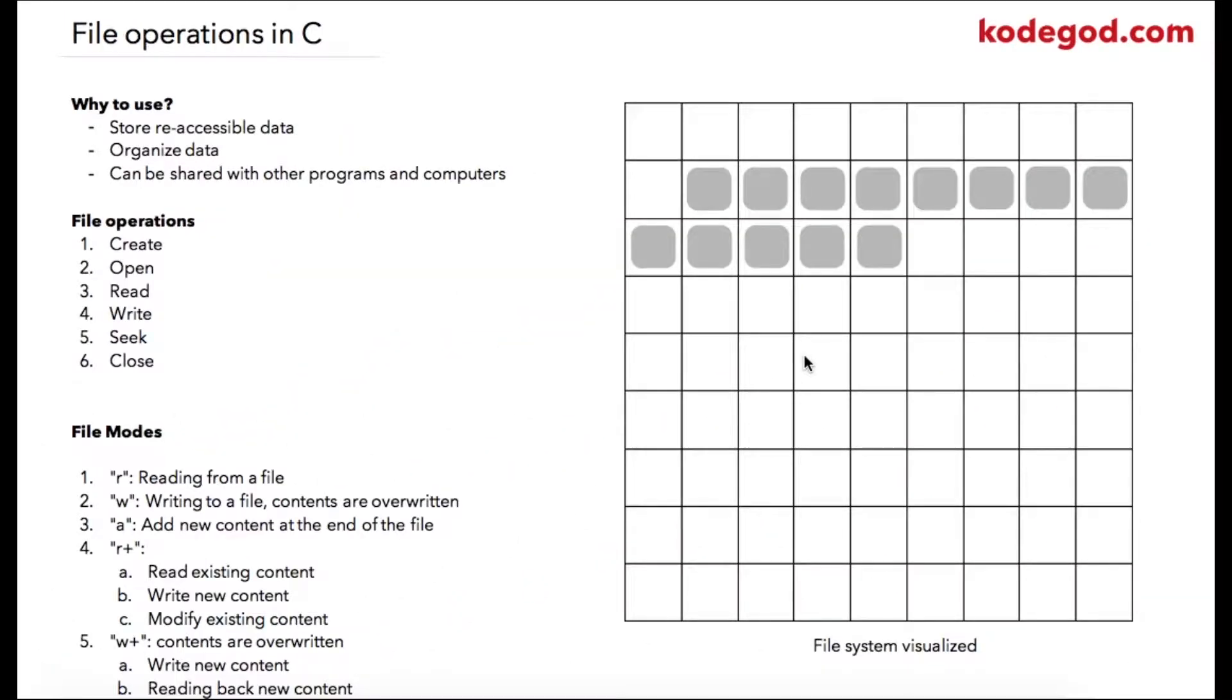In this lecture we are going to learn about file operations in C. Why do we need to use files? When we use files we can store data which can be re-accessed. When you write data to a file you can re-access that file later on. Writing data into files is a more efficient way of organizing your data.